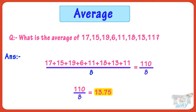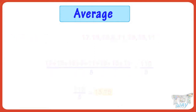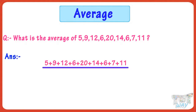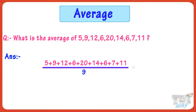Now let's take another example and find the average of these numbers. Here what we will do is we will add up all the numbers and divide the sum by 9, as we have 9 numbers. The sum of all the 9 numbers is 90. Now divide 90 by 9. Dividing 90 by 9, we get 10. So 10 is the average of these numbers.